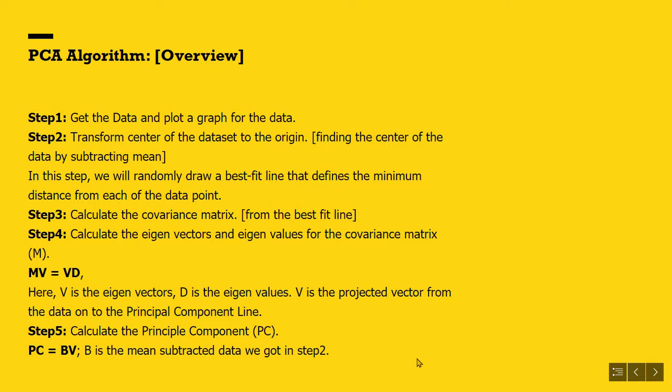In step 3, compute the covariance matrix M of the transformed data. Here, covariance is a measure between two variables that shows how those attributes vary from each other. Which means if one goes positive, then does the other one go positive? Or if one goes positive, does the other go negative?